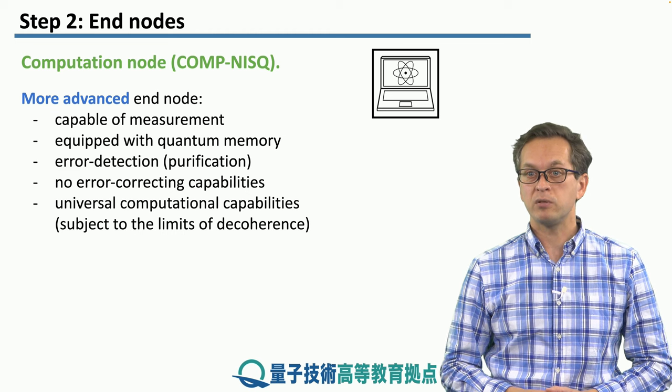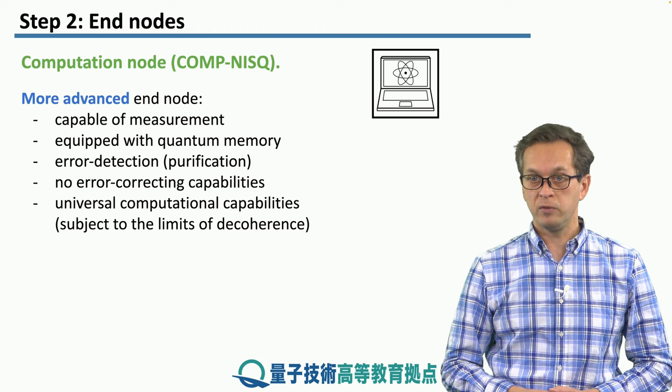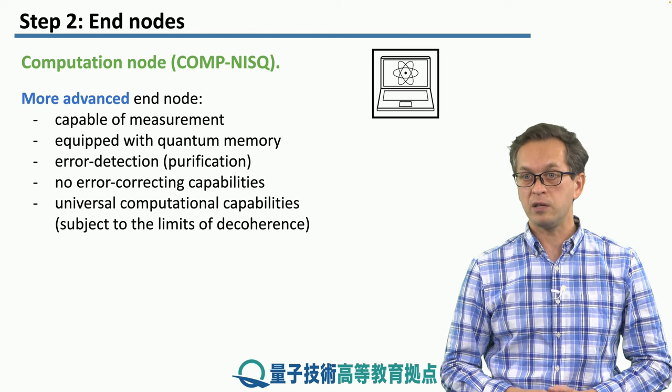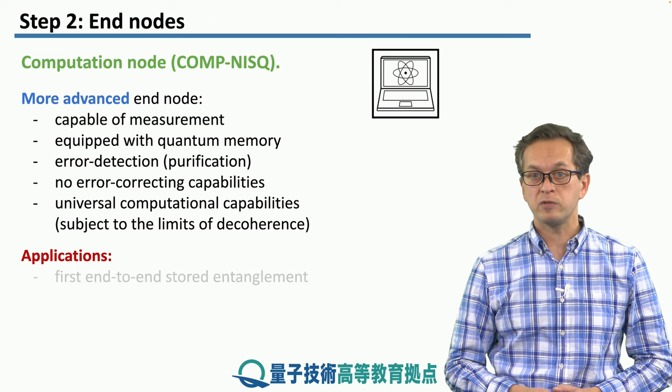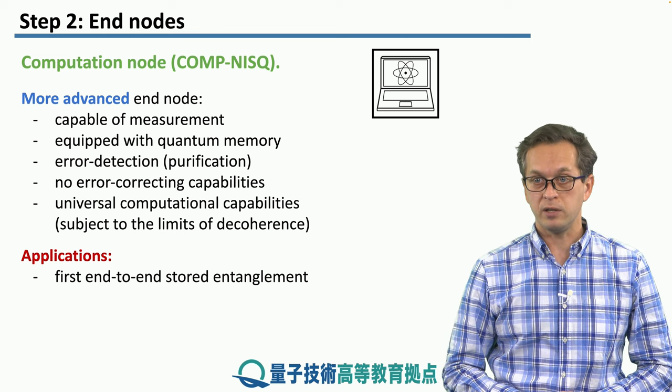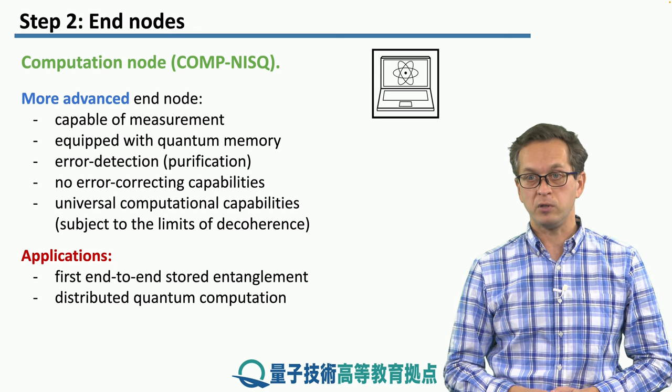As we said, this node is not capable of error correcting. So it needs to perform the universal computation fast, before decoherence really kicks in and deteriorates the fidelity too much. Applications of these nodes will be in the form of the first end-to-end stored entanglement, and in terms of some basic distributed quantum computation.